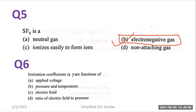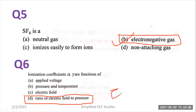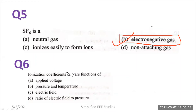Then, ionization coefficients α and γ are functions of — applied voltage, pressure and temperature, electric field, or the ratio of electric field to pressure (E/p). The right answer is the ratio of electric field to pressure, E/p. This is also derived with the help of Townsend's current growth equation by considering the secondary ionization coefficient.